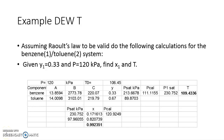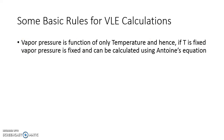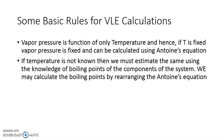We have now discussed Bubble P, Bubble T, Dew P, and Dew T for ideal VLE. A key common rule: vapor pressure is a function of temperature only. If temperature is known, vapor pressure is fixed and calculated using Antoine's equation. If temperature is unknown, we have no direct hold on vapor pressure and must estimate temperature through the boiling points of the components — that is why Bubble T and Dew T become iterative procedures.